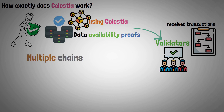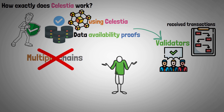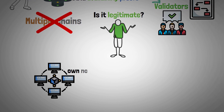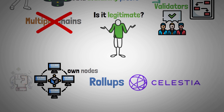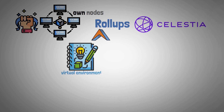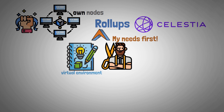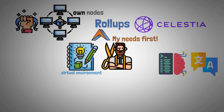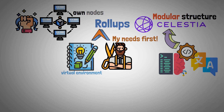However, unlike the majority of other chains, the validators are not concerned with whether the transactions are legitimate or not. The roll-ups built on Celestia handle that independently through their own nodes. Each roll-up on Celestia is capable of creating its own virtual environment and tailoring the chain to suit its needs. Any language or virtual machine can be used to build on top of Celestia due to its modular structure.